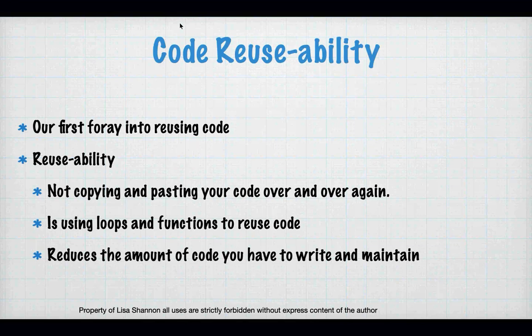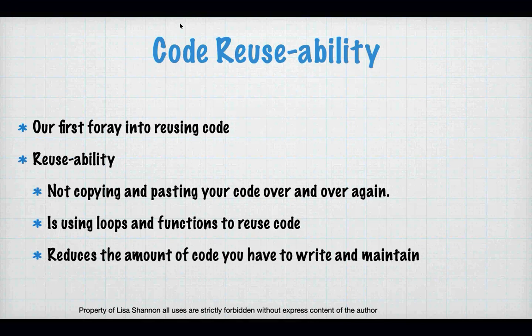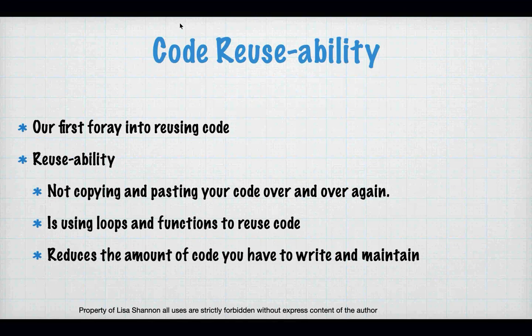Loops are the first way to achieve code reusability. Code reusability is important because it reduces the amount of code you have to write and maintain. The company I work for wants me to be effective and efficient, and wants the code to be high quality and maintainable. You will hear me talk about reusability a lot. Less code, easier to maintain, often higher quality, much less likely to be spaghetti code.